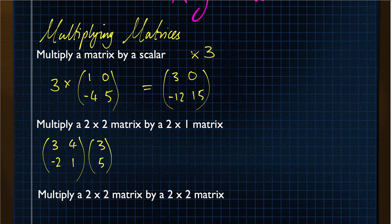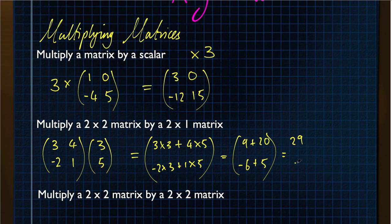So multiplying this, I multiply everything in the first row by everything in the column, and then everything in the second row by everything in the column, and add the results together. So I start 3 times 3, plus 4 times 5. And I've got, in the bottom row, minus 2 times 3, plus 1 times 5. So that's 9, plus 20, minus 6, plus 5, equals 29, minus 1.